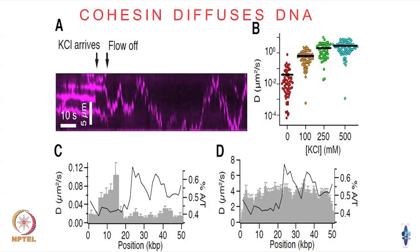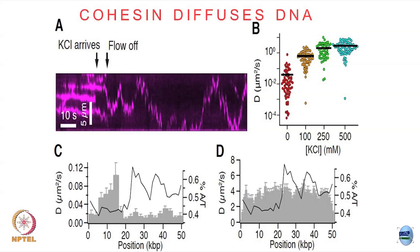For diffusion the scaling exponent should be 1, and experimentally they determine it to be 0.98 — which is quite impressive. You can also measure the diffusion coefficient at different salt concentrations. Physiological salt concentration is roughly between 100 to 250 mM. At physiological salt, the diffusion coefficient of this cohesin molecule forming the loop is somewhere around 0.1 to 1 micron squared per second.